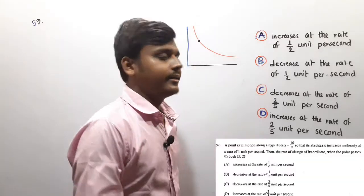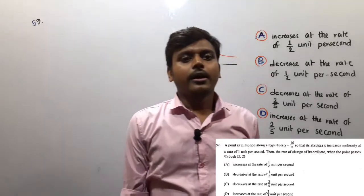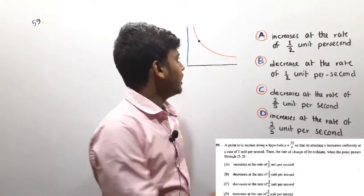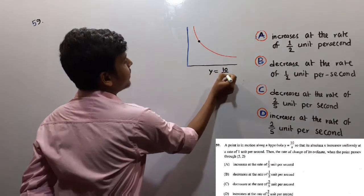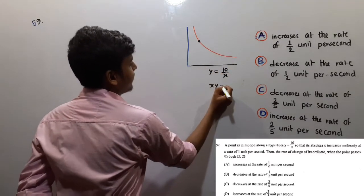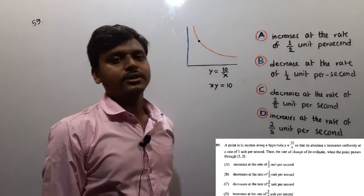The point is in motion along a hyperbola y equals 10 by x, or xy equals 10. This type of hyperbola is the path of point motion.